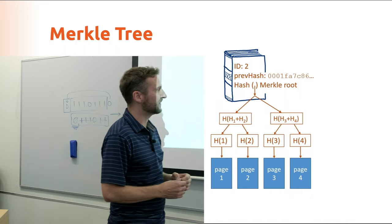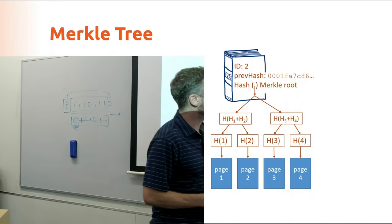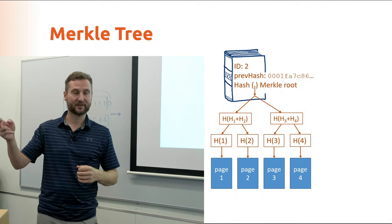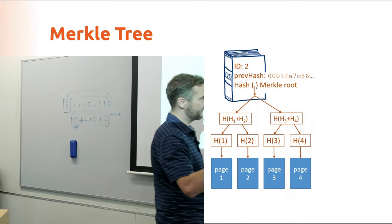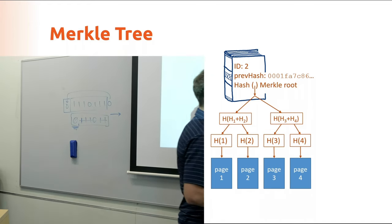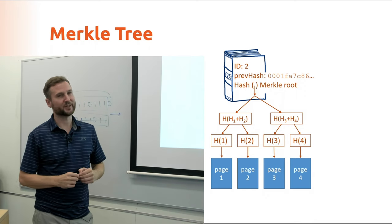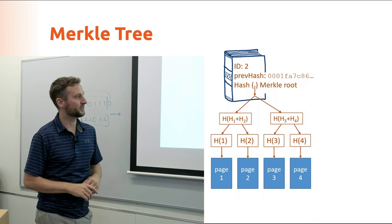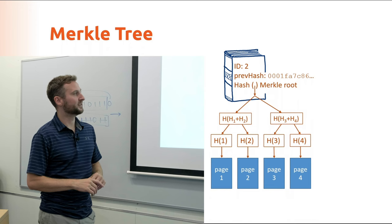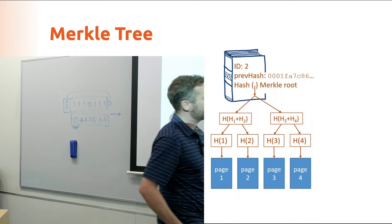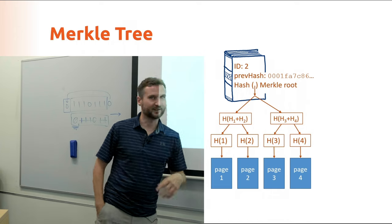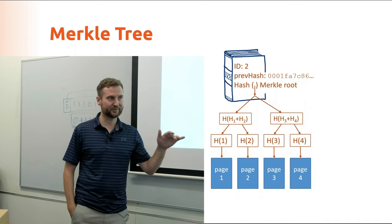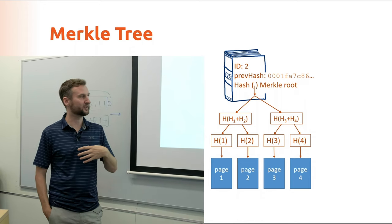So why would we want to do this? Well, what we're going to do is we're going to take advantage of the logarithmic nature of a binary tree. So binary means we only have two options in the tree. It means we only have two leaves per branch in the tree. So if you're building a tree and you have an odd number, then you want to add an additional one so that your last one has a pair to go with. And then if we think about maybe page two has a special transaction that I want to verify, somebody paid me some Bitcoin and I want to verify that. I don't care about page one, page three, and four. I just care about the one that has my transaction in it.